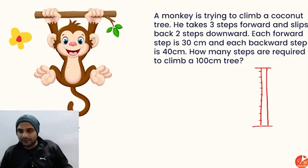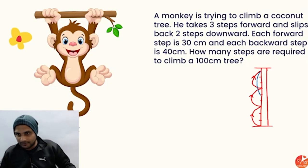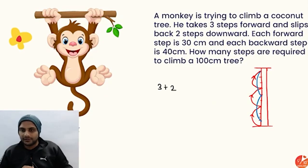Starting from the bottom, the first, second, and third steps each go 30 centimeters upward. Then he slips back two steps, each of 40 centimeters. So in these five steps — three up and two down — the monkey has only climbed a net of 10 centimeters.